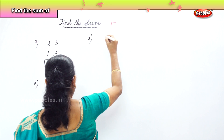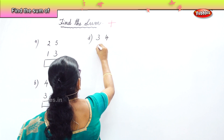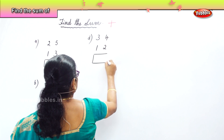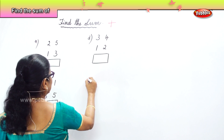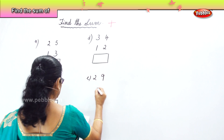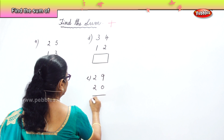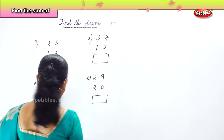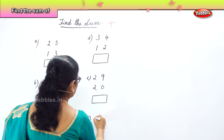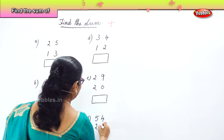Next: thirty-four plus twelve. Twenty-nine plus twenty-nine. Fifty-four plus twenty-three.